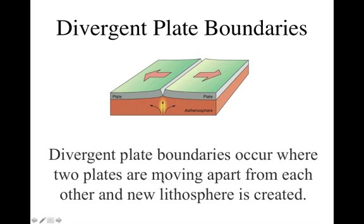And here it is. It is a boundary where two plates are moving apart from each other, and when that happens, new lithosphere is created. That's very important — make sure you write that down. As this plate moves this way and this plate moves this way — remember this is crust plus lithosphere — it leaves a gap in the middle. The magma in the asthenosphere bubbles up and fills the gap, and when that magma gets to the surface it hardens and becomes new lithospheric plates. So we are actually creating new plates here.